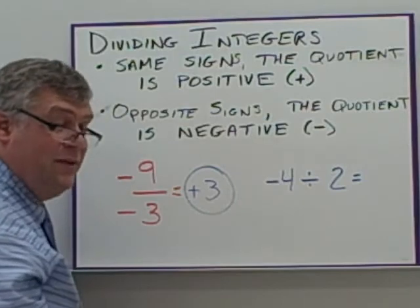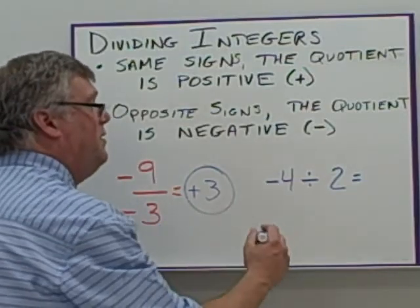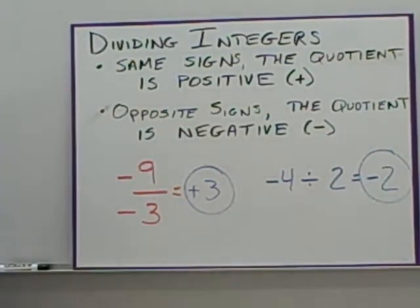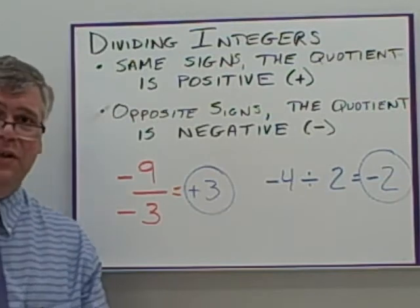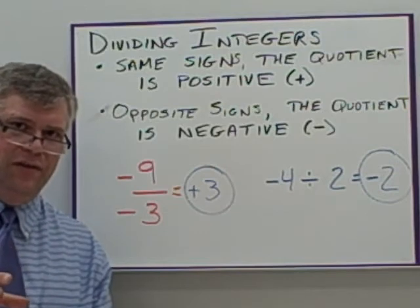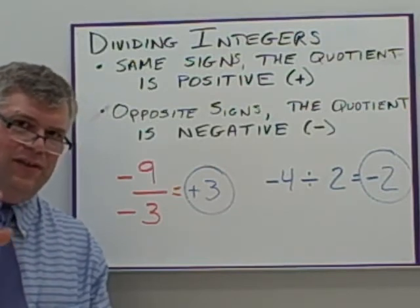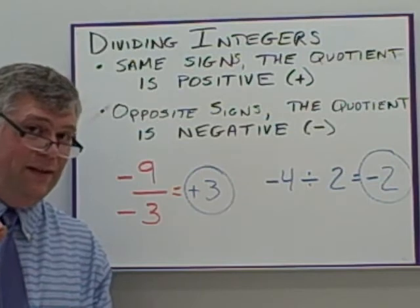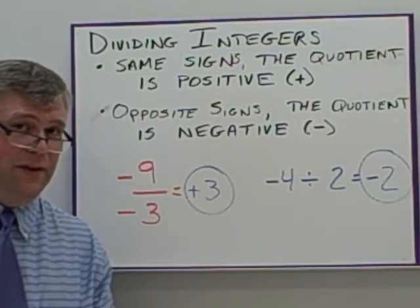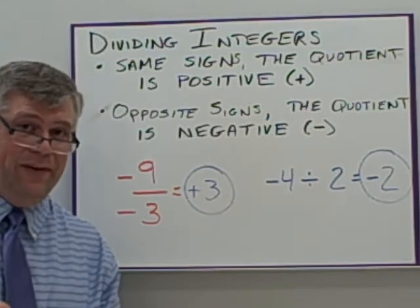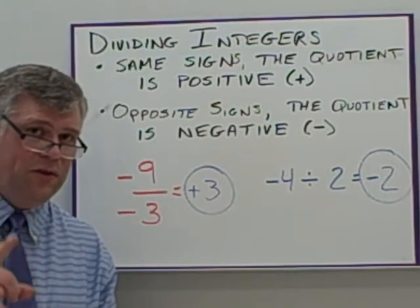Here I've got opposite signs being divided. Negative 4 divided by 2: 4 divided by 2 is 2, and we know the answer is negative because we have opposite signs, giving us negative 2. One more thing about multiplying integers: if you're multiplying multiple integers, add up the number of negative signs. If the number of negative signs is even, the answer will be positive. If the number of negative signs is odd, the answer will be negative.